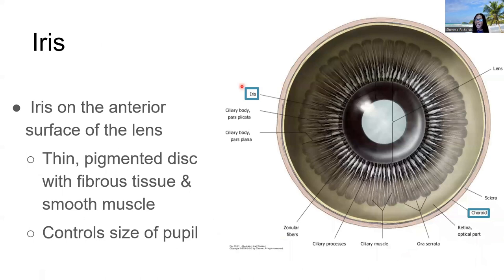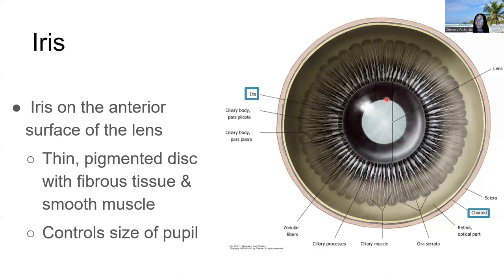The iris also has the ability to relax or contract to change its shape — this is what controls the size of the pupil. If we relax the iris, the pupil becomes larger; if we contract the iris, the pupil becomes smaller. This again can give us an idea about deeper brain functions and a person's state of arousal.